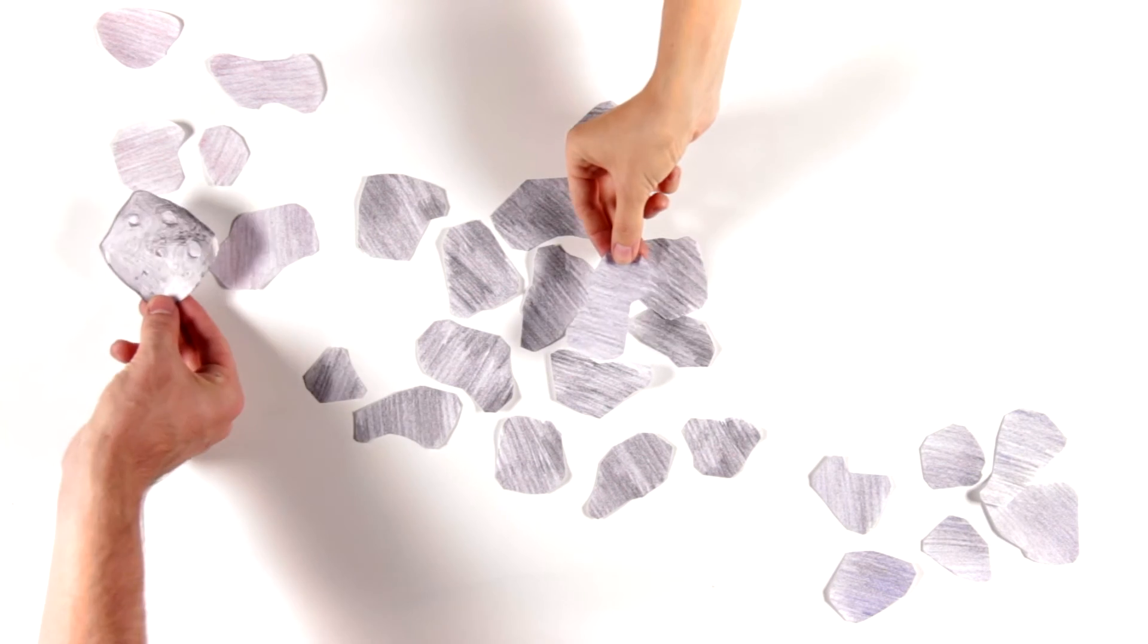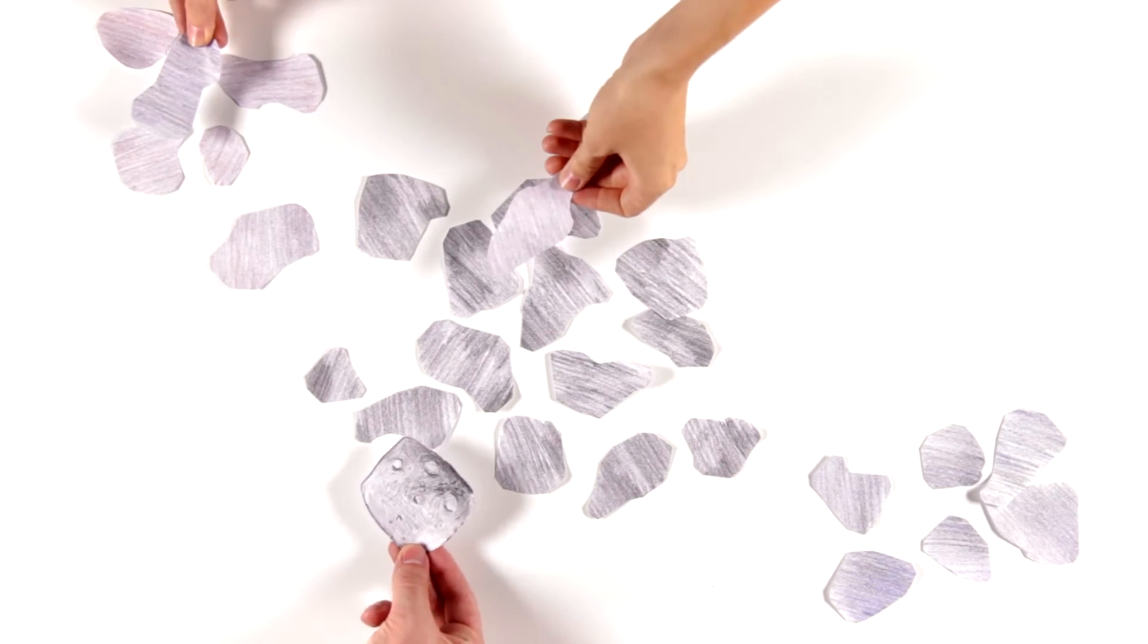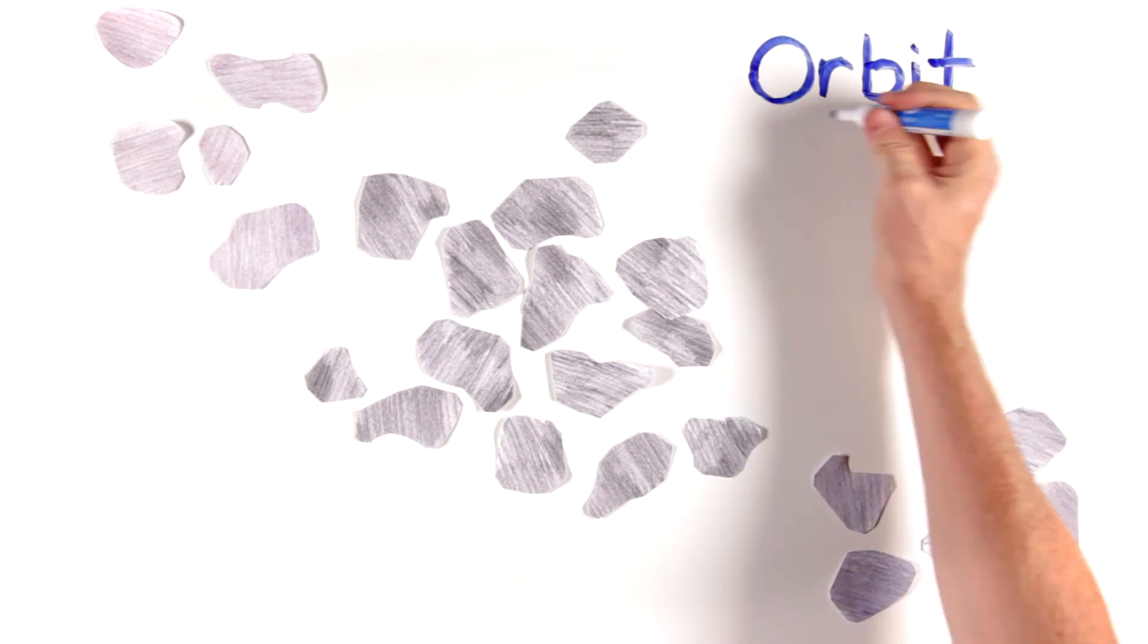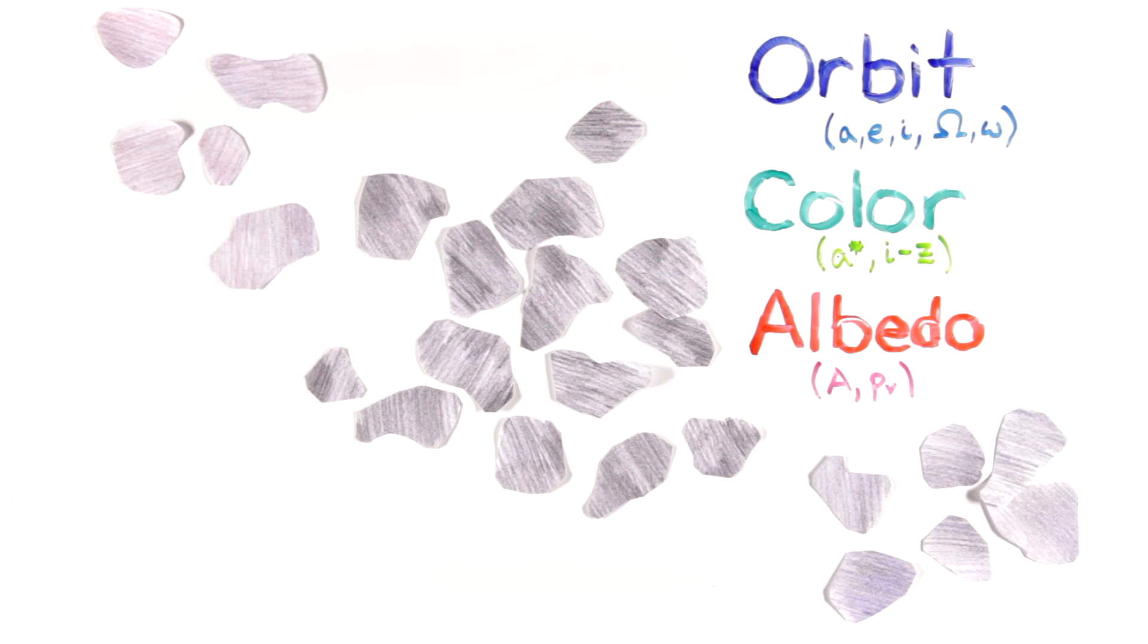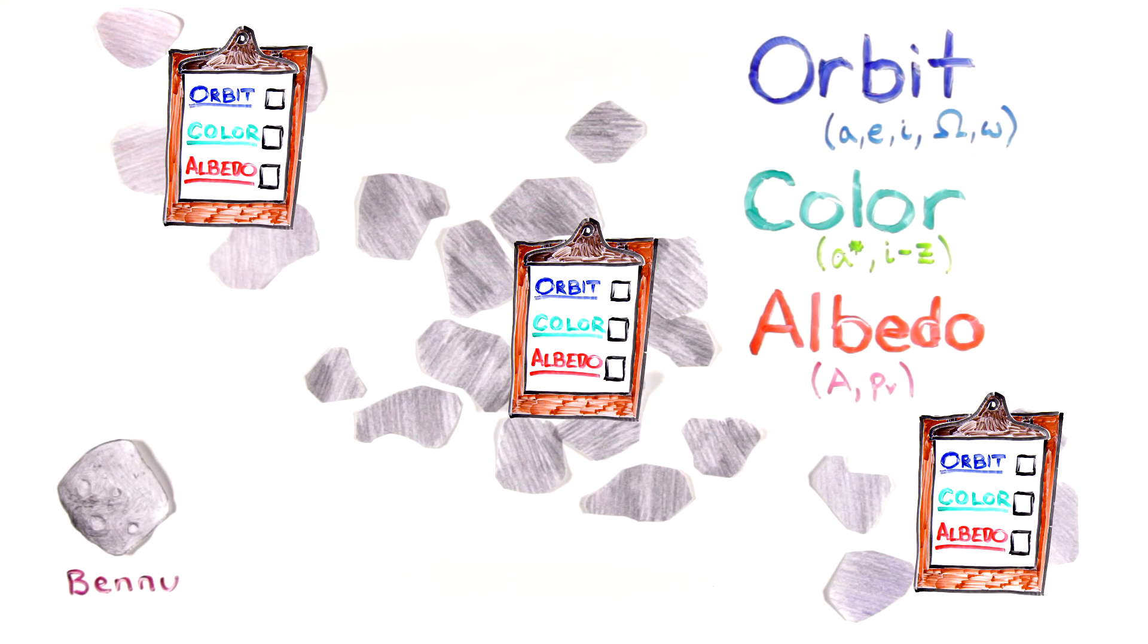Scientists tried to trace Bennu and other near-Earth objects back to their families by matching three main characteristics—orbit, color, and albedo, which measures surface brightness. Bennu's color and albedo match those of several families in the asteroid belt.